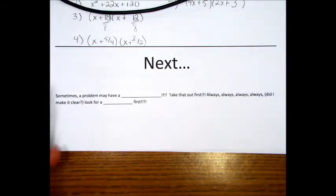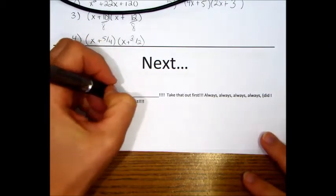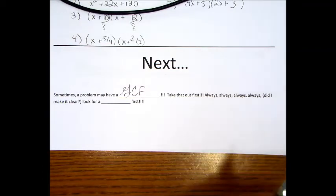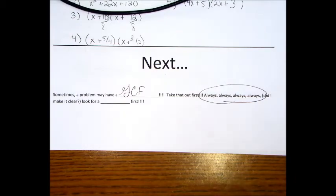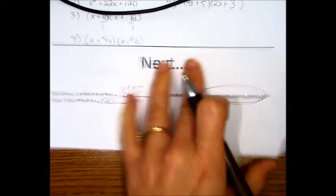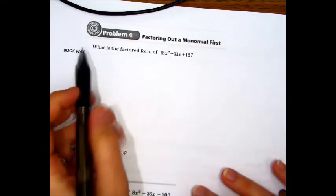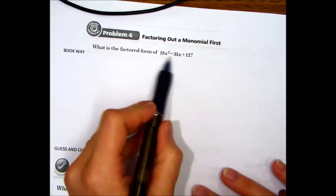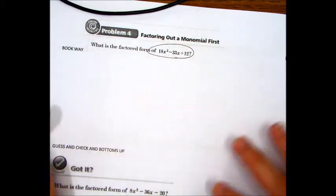Moving on to the next part of the notes. It's really important that sometimes you recognize a problem is going to have a GCF first. If you see that a problem has a GCF, you have to always take that GCF out before you begin the problem. As you can see, my guest speaker is no longer with me, so you're just going to have to deal with me on my own. All right, let's try, we're going to try each way one more time. Book way, guess and check, and bottoms up. So let's try the book way one more time. They want us to factor this trinomial. If you take a look at this trinomial, unlike any of the other problems, this time it has a GCF.